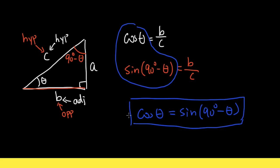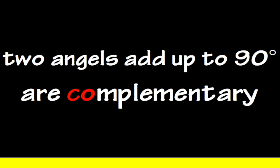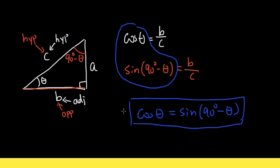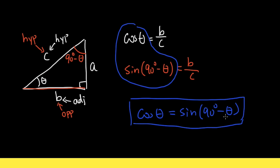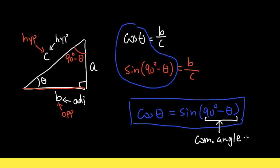Now let's talk about some vocabulary. We know that if two angles add up to 90 degrees, they are called complementary angles. This angle is theta, and this angle is 90 degrees minus theta — that is its complementary angle. So cosine theta equals sine of the complementary angle of theta. That's the connection: cosine is the sine of its complementary angle.